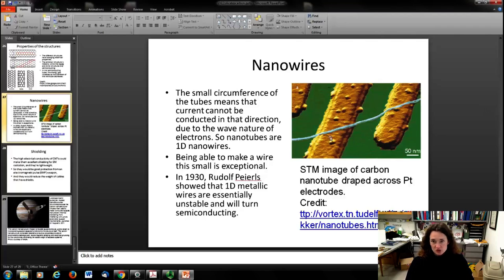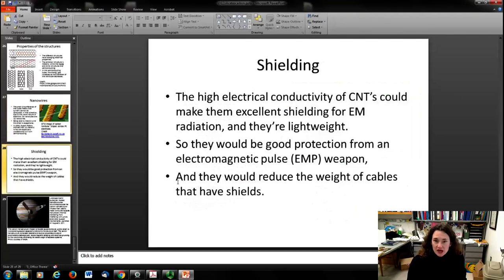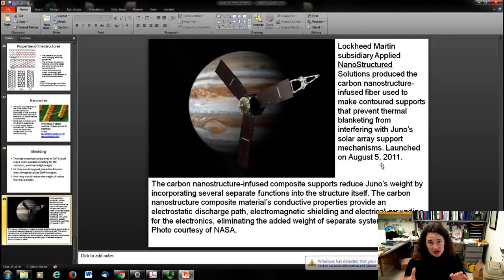Because they're so lightweight and such good conductors, they make really nice lightweight cables. The high electrical conductivity combined with that lightweight makes them excellent shielding for electromagnetic radiation. They might be good protection from an electromagnetic pulse weapon because they could carry away that pulse current and act like inside a Gaussian surface, protecting and shielding you from the field. They would reduce the weight of electrical cables that have these shields, and they've already been used for this purpose. Of course, one area where you really might want to worry about the weight of your electrical cables is for space, and you need a lot of electric shielding in space.